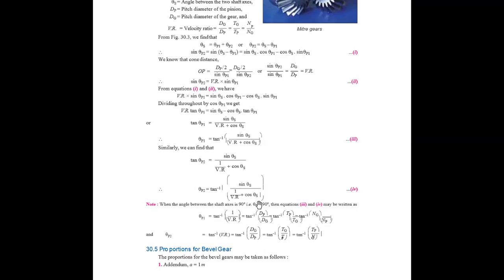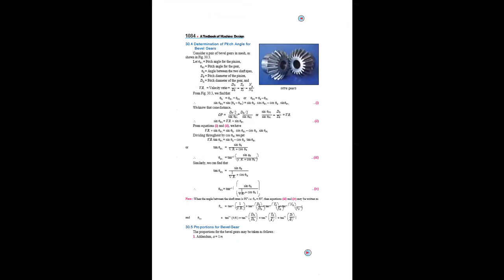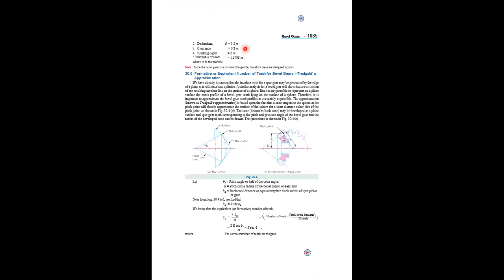Proportions for bevel gear design: addendum = 1 module; dedendum = 1.2 module; clearance = 0.2 module; working depth = 2 module; and tooth thickness = 1.5708 module. These five proportions must be remembered, as they are used to solve design examples.